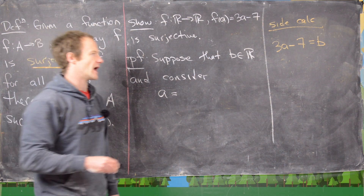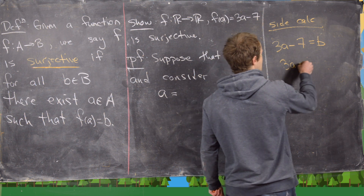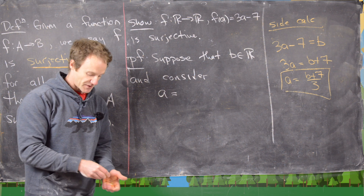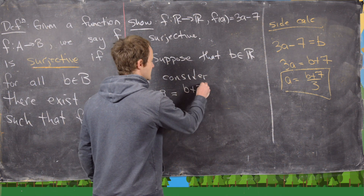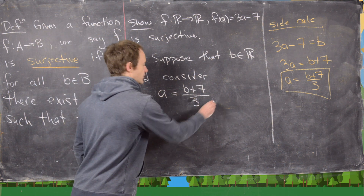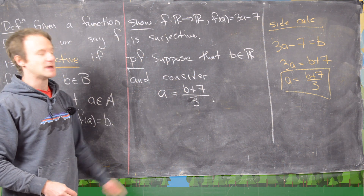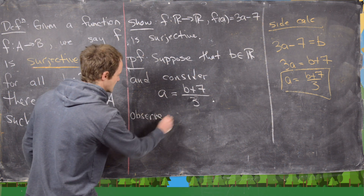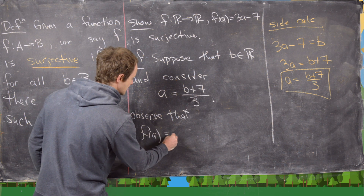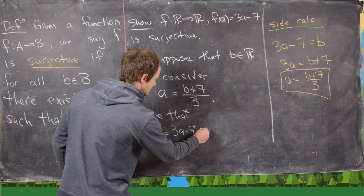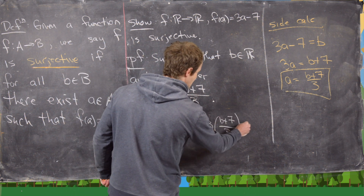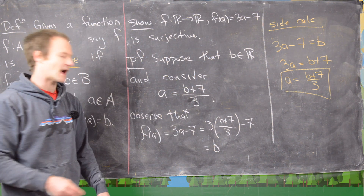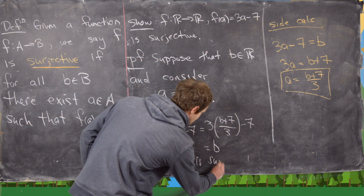The side calculation: we want to solve 3a - 7 = b for a. That gives us 3a = b + 7, which makes a = (b + 7)/3. So that's the value of a we consider — (b + 7)/3 — and notice that's a real number for any b. Now we observe that f(a) = 3a - 7 = 3·(b + 7)/3 - 7 = b by simple algebra. This means f is surjective.